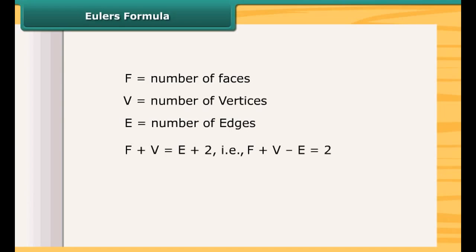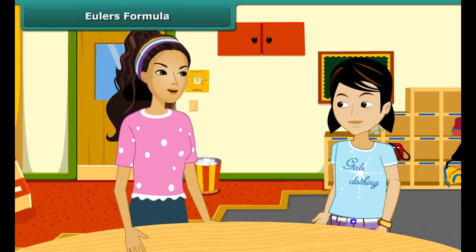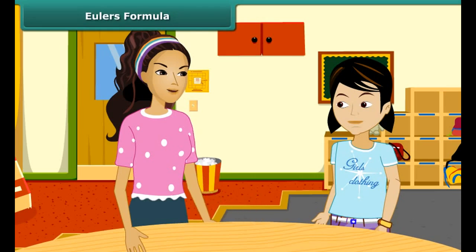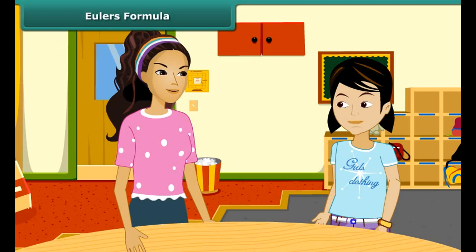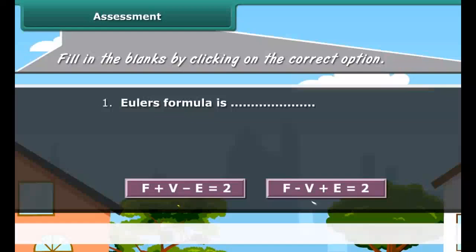This formula is true for any polyhedron. If the number of vertices and number of edges of a polyhedron is given, then we can find the number of faces using Euler's formula. And if the number of faces and number of vertices are given, then we can find the number of edges. When two values are given, we can find the third value using Euler's formula.